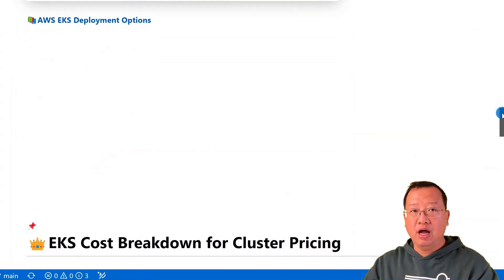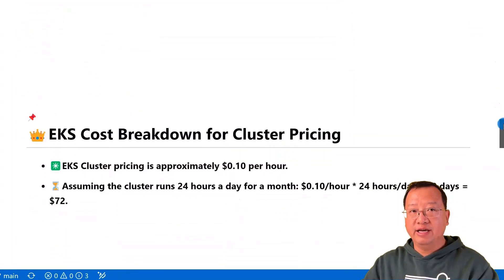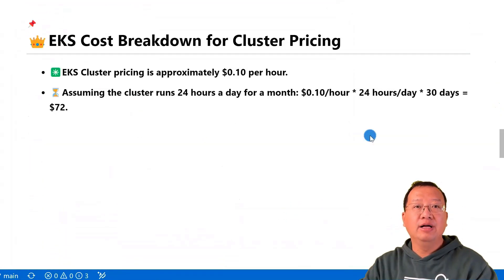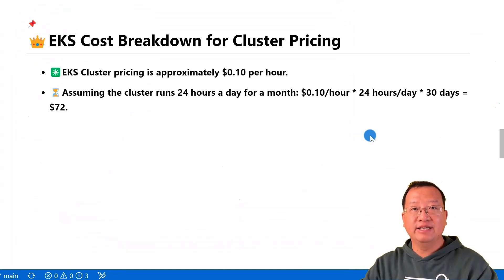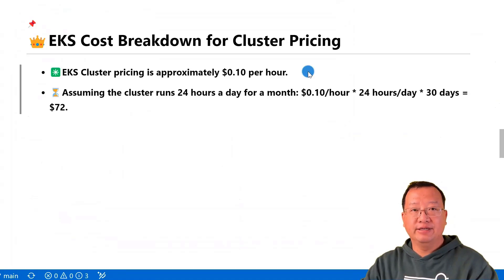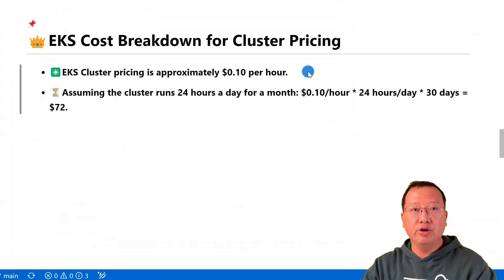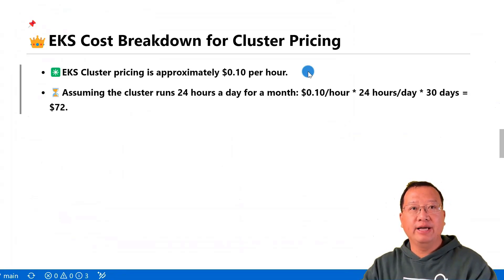Now let's dive into the heart of an EKS cluster — the master node, also known as the AWS EKS Control Plane. For detailed pricing, an EKS cluster costs $0.10 per hour in US-East-1, US-East-2, and other regions. It is location-dependent.